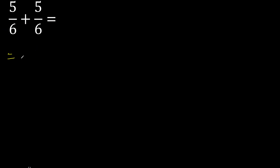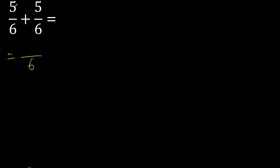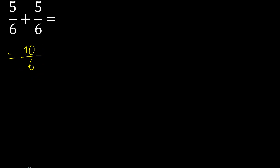Here equal number, therefore here 6 over 5 plus 5, 10. Can be simplified because it can be divided by the same number. Divided by 2: 10 divided by 2 is 5, 6 divided by 2 is 3.